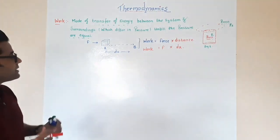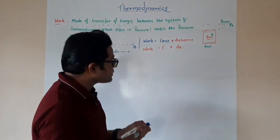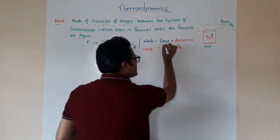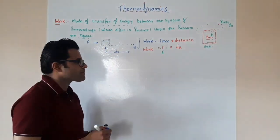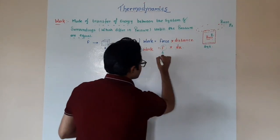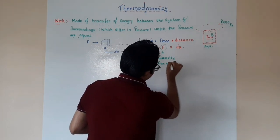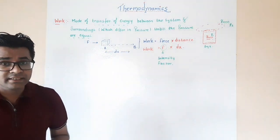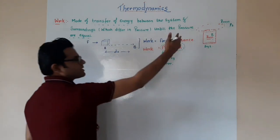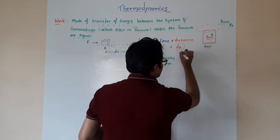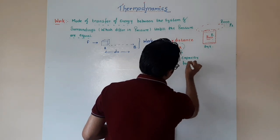Before proceeding further to define work with respect to thermodynamics, we need to understand two things. The force F is called the intensity factor, while dx — the displacement or distance covered — is considered the capacity factor.